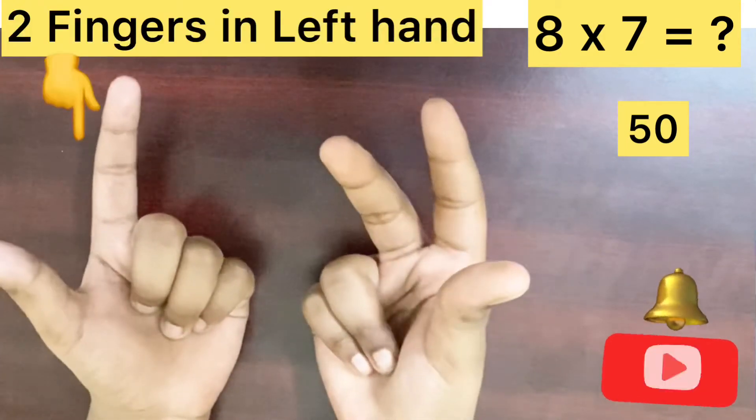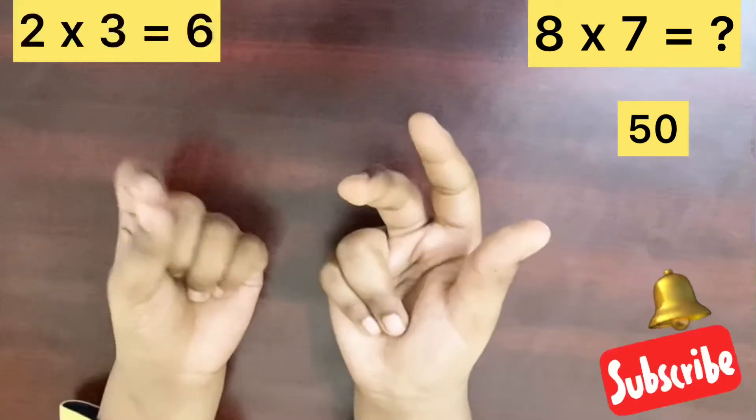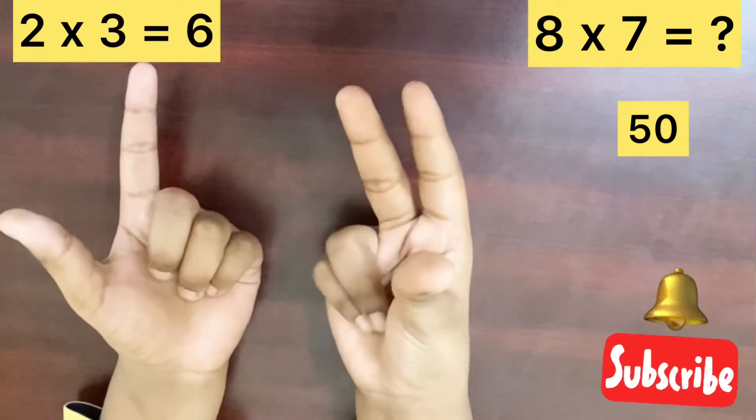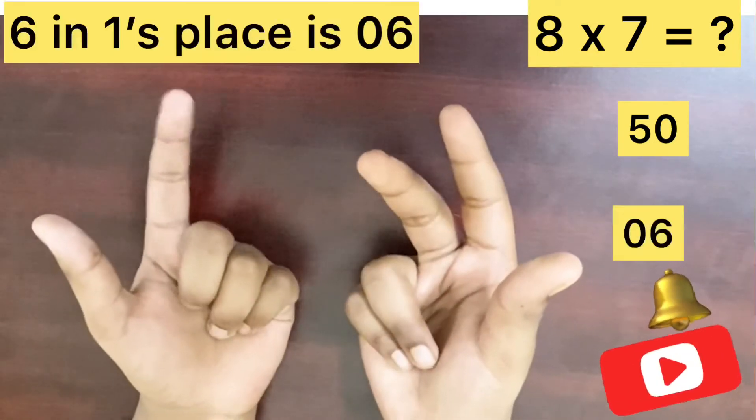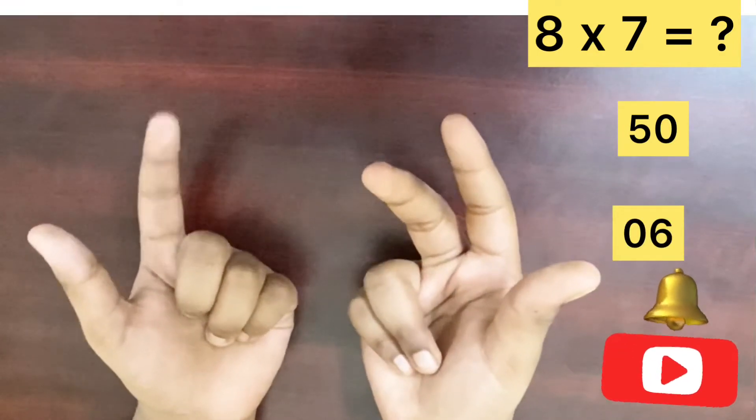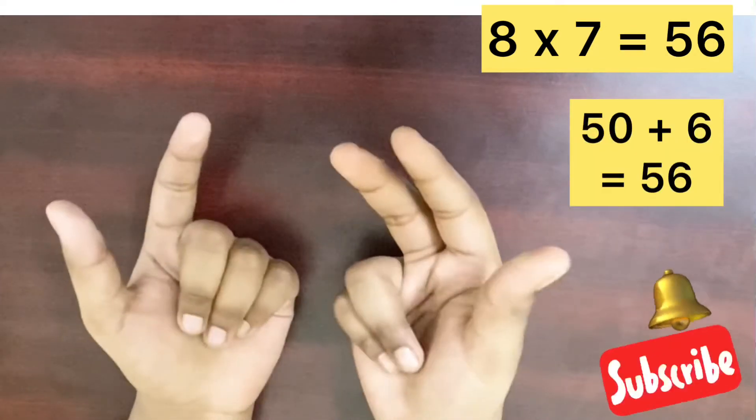Now, multiply both hands unfolded fingers with each other. 2 multiplied by 3. So, the answer is 6. Keep the 6 in 1's place. Finally, we get the answer as 50 plus 6. 56. Very simple friends.